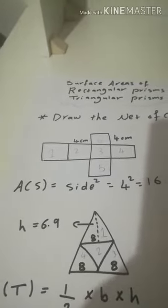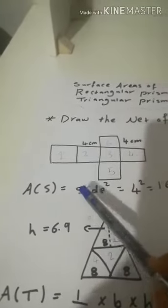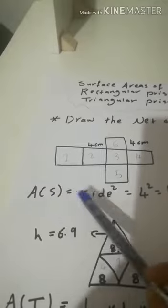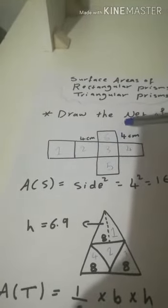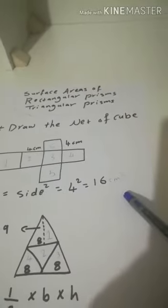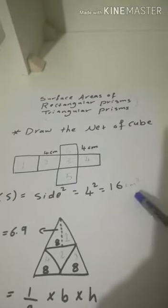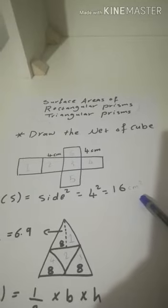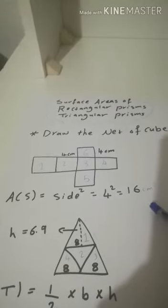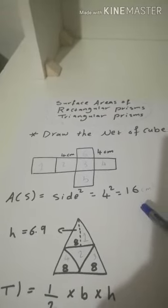To find the area of a square, you have to put the formula. We already know that the area of a square equals side squared. If we have the side as 4, 4 squared equals 16. Don't forget to put the unit, so it's 16 centimeters squared for each square. We have six squares, and each one of them has this area.